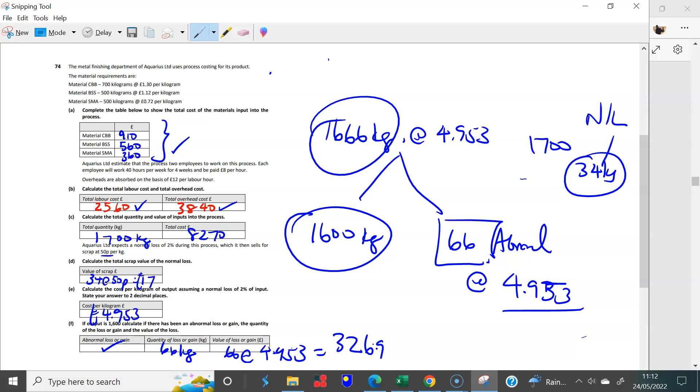Now it's for someone to explain to us why we have this abnormal loss in the first place. Cool, great stuff. And so the answer there is 326.9. Cool, great stuff. Thank you.